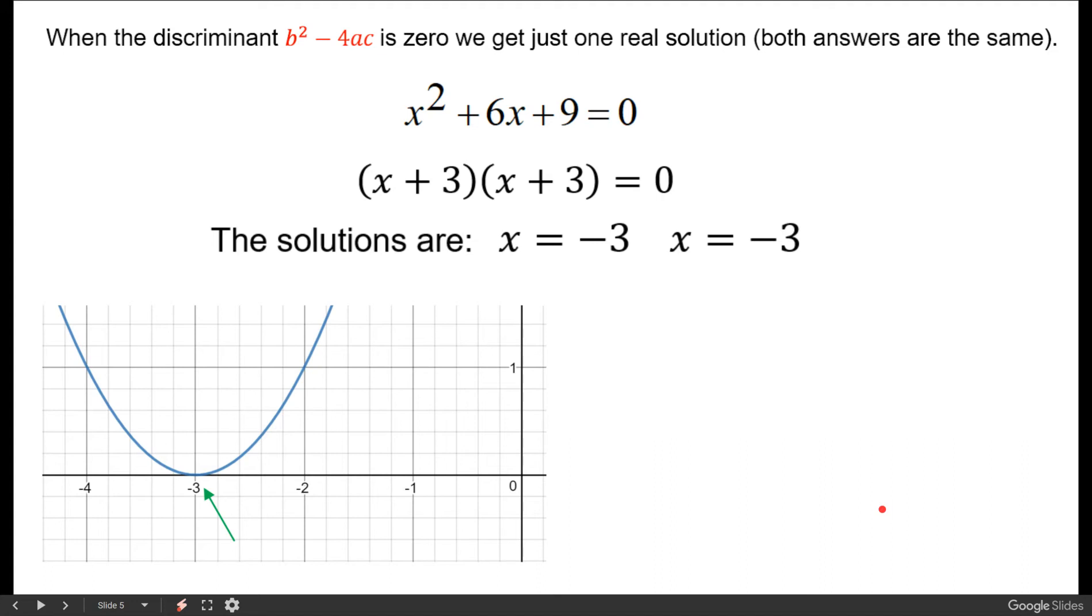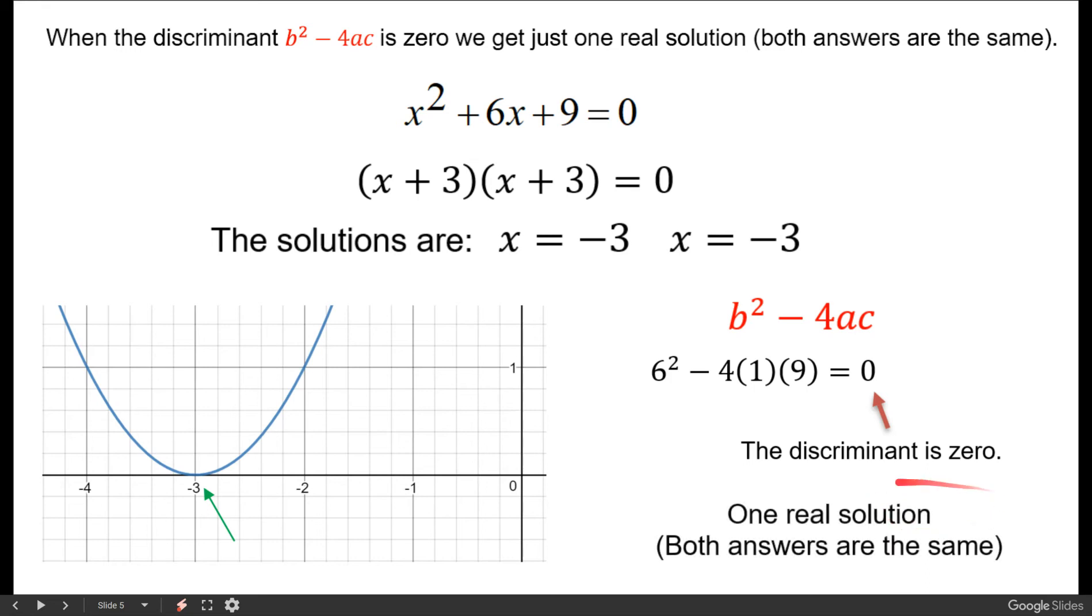In other words we bounce the x-axis so we touch the x-axis in one place and when we look at the discriminant we get 0. So we get one real solution or we get two answers but they're both the same.